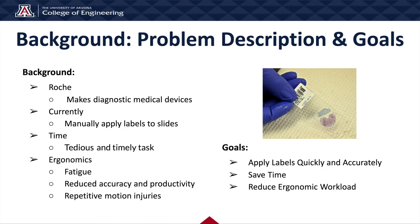Roche makes medical devices that help identify disease and diagnose patients. If you have a biopsy done, your tissue sample gets sent to the lab where it's embedded in paraffin wax, cut into incredibly thin slices, placed on microscope slides, and stained with different chemicals. Each of these slides needs to be labeled with patient identifiers and a barcode that tells the automated equipment what stains to use and which processes to carry out. Currently, lab workers are manually applying these labels. This process is tedious and time-consuming and can lead to fatigue, reduced accuracy and productivity, as well as repetitive motion injuries such as carpal tunnel.